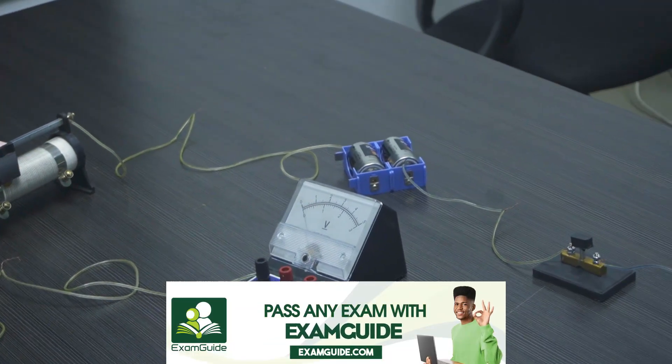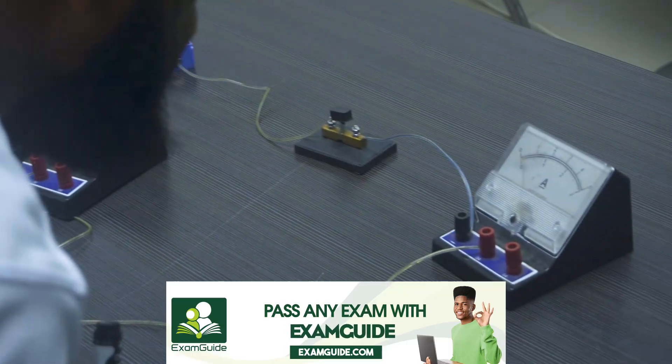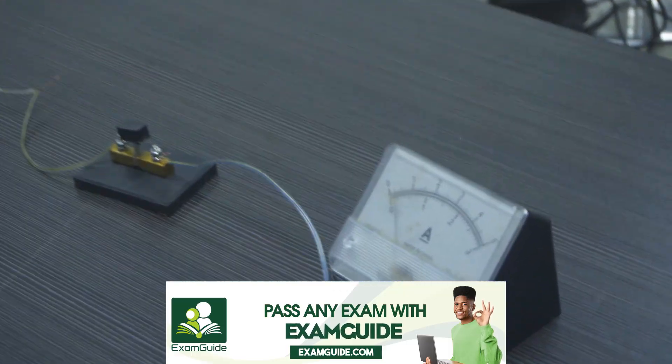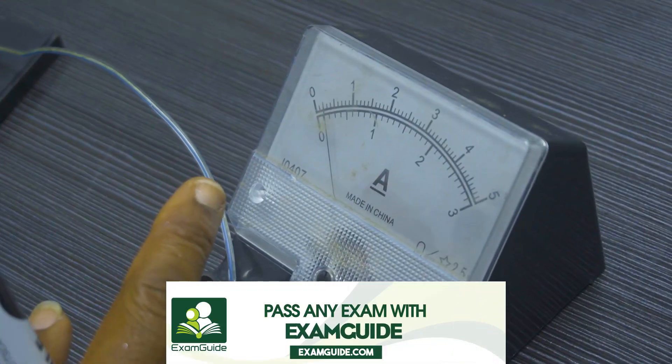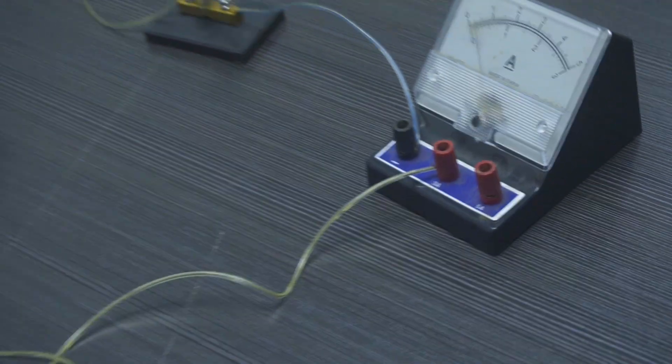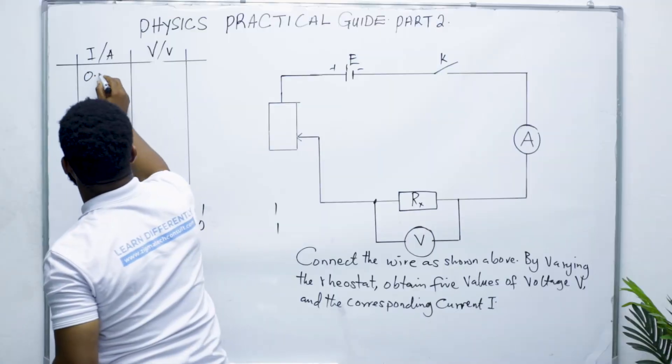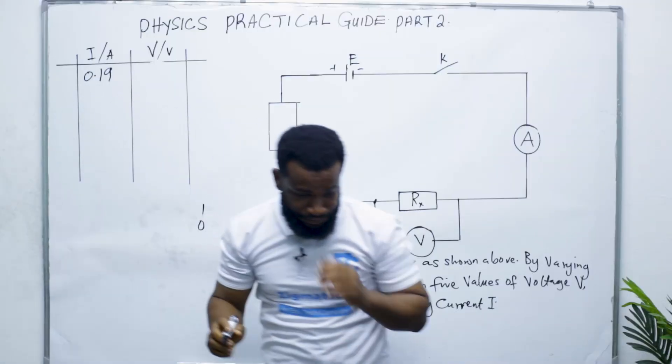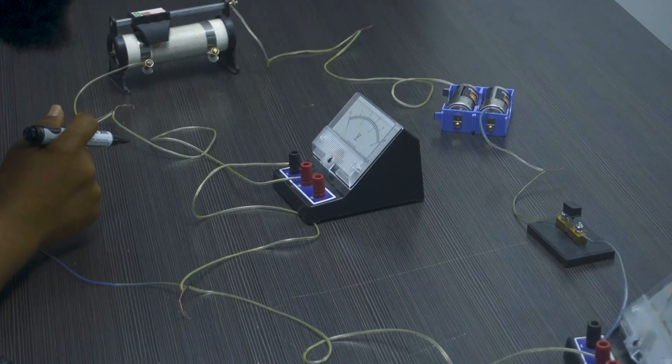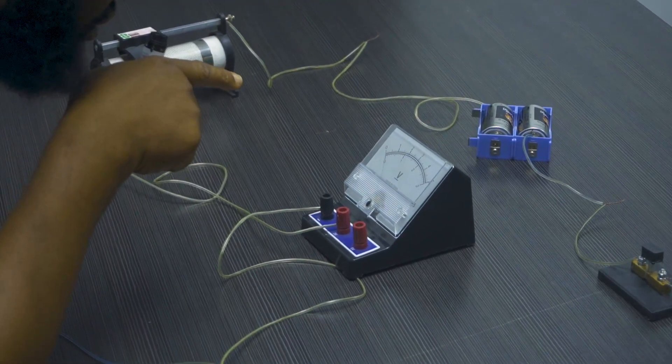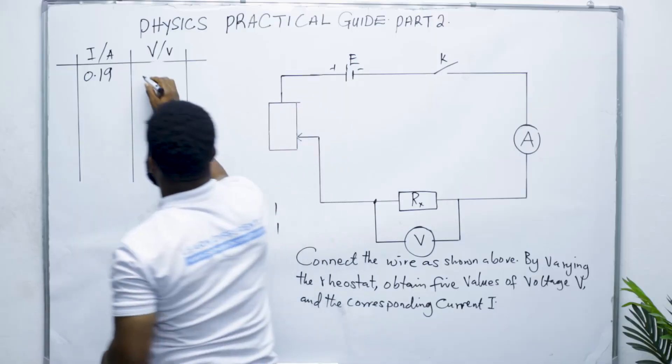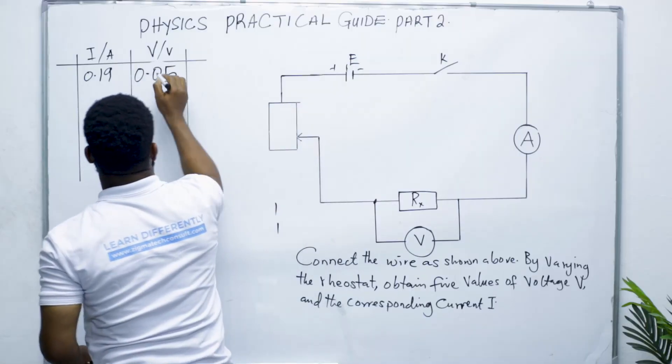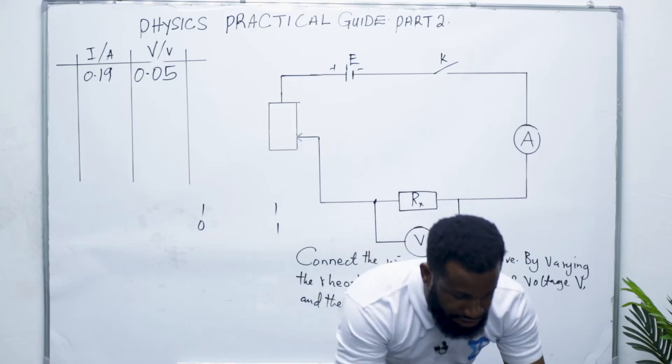All right, so let's read together. This is 0.19 on the ammeter, right? 0.19, not up to 0.2. So the ammeter is 0.19. Please correct. So this is going to be not up to 0.1, so it's going to be 0.05 for voltage. All right, let me increase a little again.